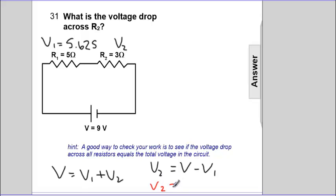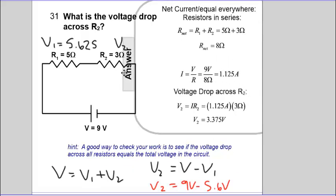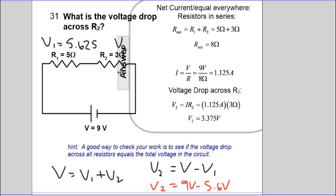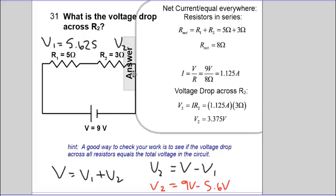V2, which is the unknown, is V, the battery, 9 minus 5.6 volts. When we take the difference of these, let's reveal it, we get 3.375 volts. 3.375 and 5.625 take us back to 9 volts.